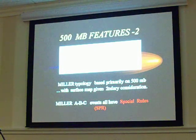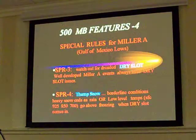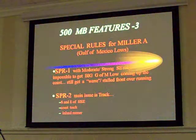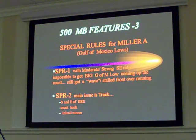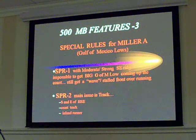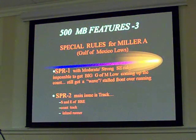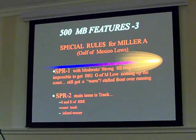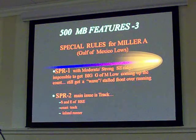All these events have special rules. Special rules for the Miller-A — the Gulf of Mexico lows. Special rule number one: with moderate southeast ridges it becomes impossible to get the big Gulf of Mexico low to come up the coast. You're not going to get that big system coming with a huge ridge over the southeast or Florida. You may still get a wave coming up the coast, and that can produce significant snow, so you still can get a significant event out of it, but if you're looking for a major historical event, you're not going to get that.